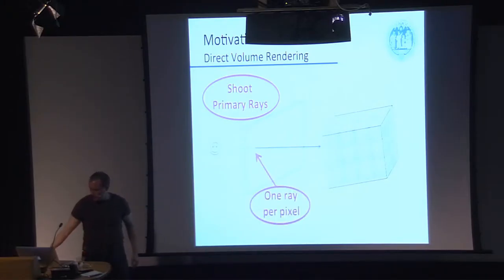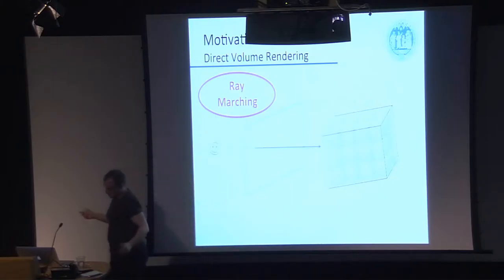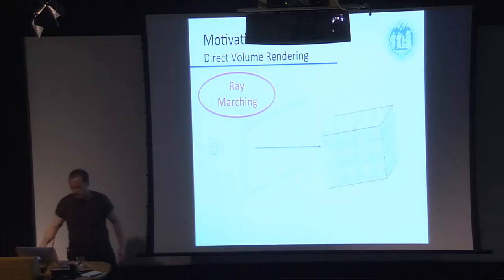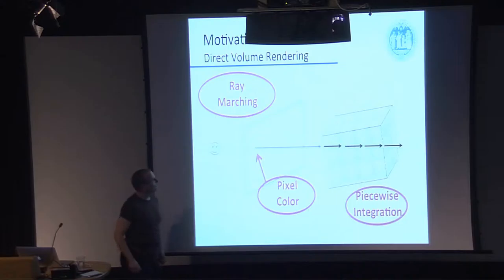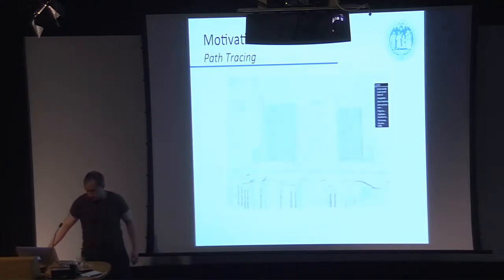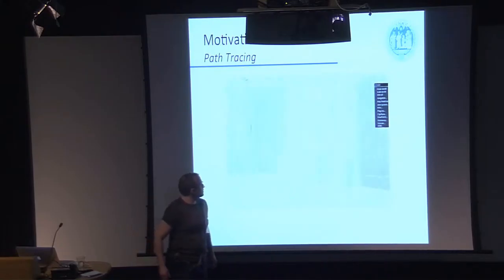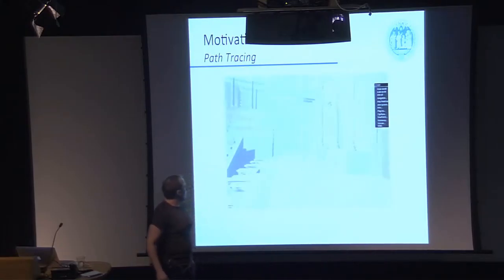You intersect each primary ray with the bounding box of the dataset. If it doesn't intersect, you simply assign a background color. If it does intersect, you perform a ray marching algorithm to do piecewise integration and eventually determine the color through that pixel.